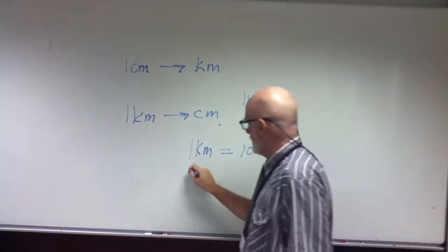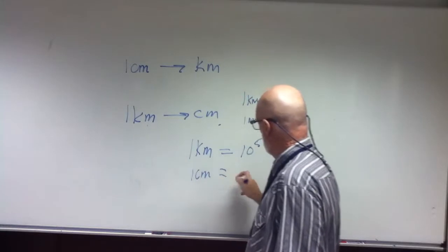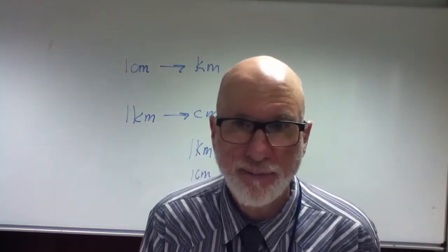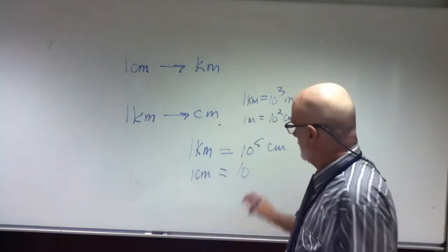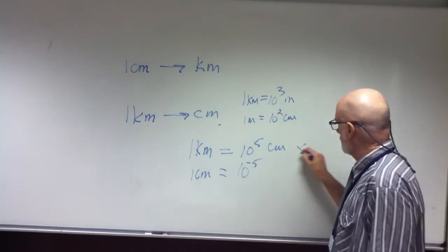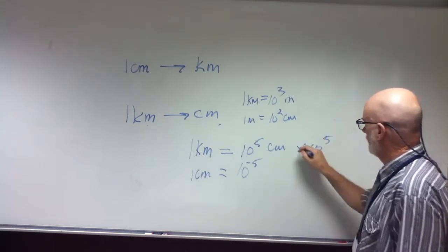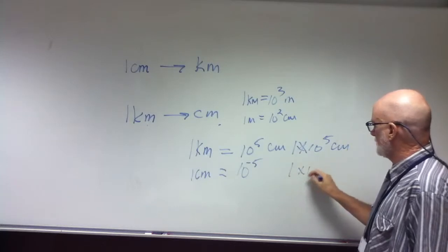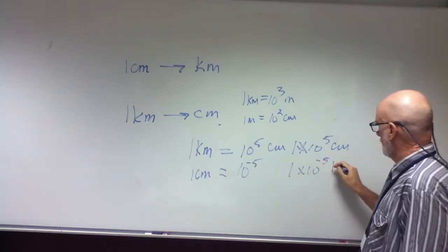All right. So, one centimeter is going to be ten to the what? Ten to the what? Negative fifth. Correct? So, it'll be one times ten to the fifth. One times ten to the fifth centimeters. One times ten to the negative fifth kilometers.